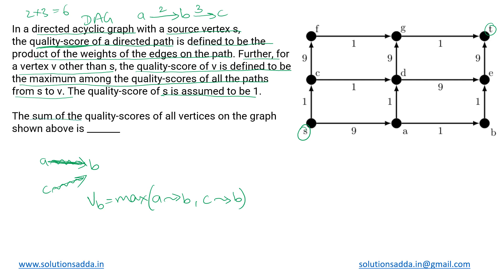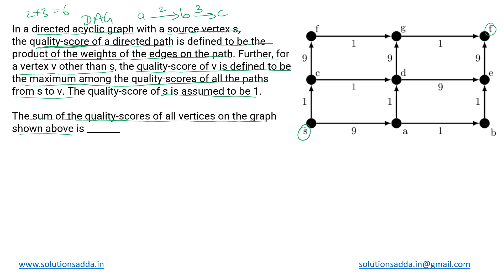What we have to do is calculate the sum of all the quality scores for all vertices in this graph. For every vertex we calculate its quality score, and at the end we return their sum. Let us take up the vertices one by one. We have vertices s, c, d, a, f, g, b, e, and t. For s, since it is the source vertex, its quality score is 1.